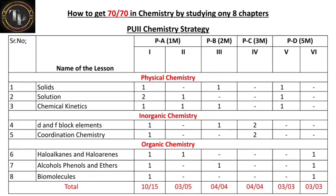For two-mark questions, you have to write four questions — all four are covered from these chapters. For three-mark questions, four questions to answer, all from these chapters. From D and F block elements you get two three-mark questions, and from coordination chemistry two more. One coordination chemistry question is directly fixed on hybridization, and another may ask about molecular orbital diagrams or ligand field strength — so cover Werner theory as well.